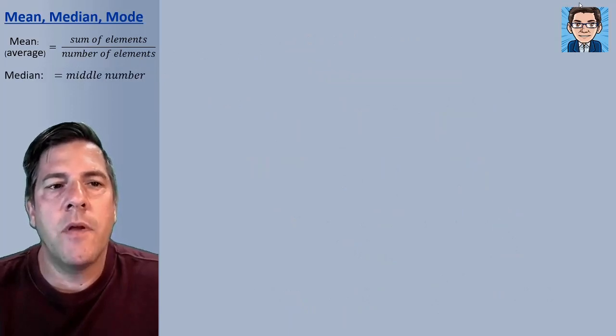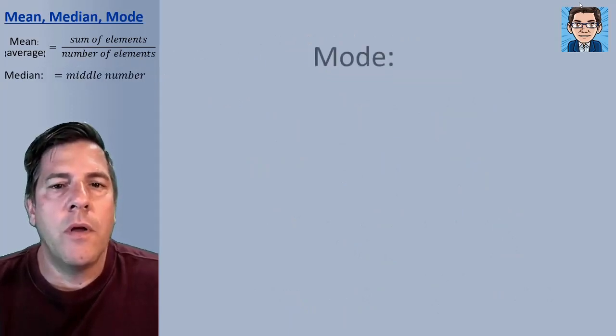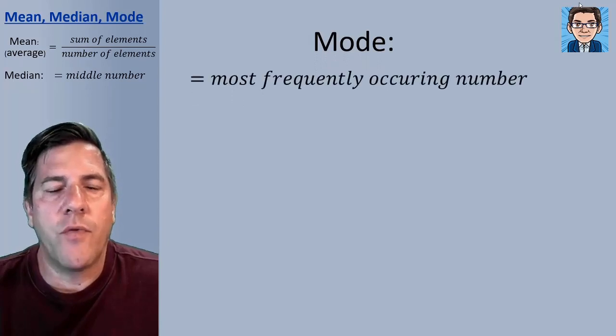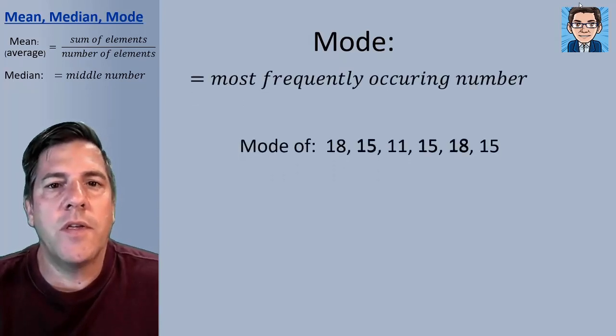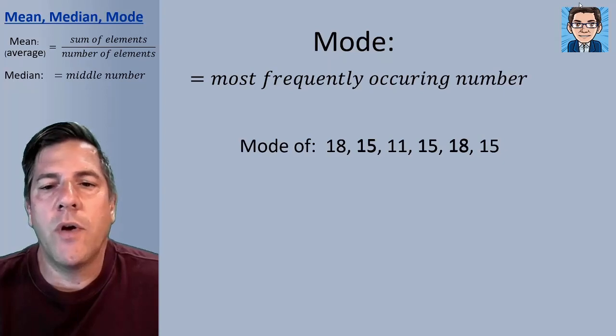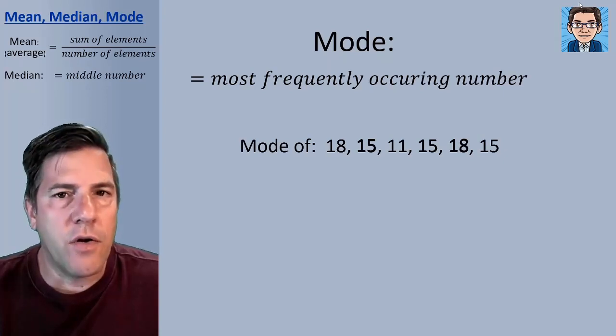And then the last item is just the mode. The mode is just simply the most frequently occurring number. So if you look at these numbers here, you can look at them and see that 15 occurs most often.